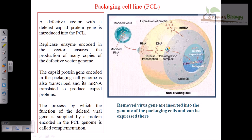This is how we produce the modified virus vector. We have the modified viral RNA, we incorporate the insert, and it can go and insert into our target cell. For insertion, we also need complex proteins that can integrate with the DNA or RNA coming from the virus. If it is a retrovirus, the RNA will produce a DNA, and that DNA along with some protein factors will go and insert itself into the nuclear genome. The removed virus genes are inserted into the genome of the packaging cell and can be expressed in cells of interest.